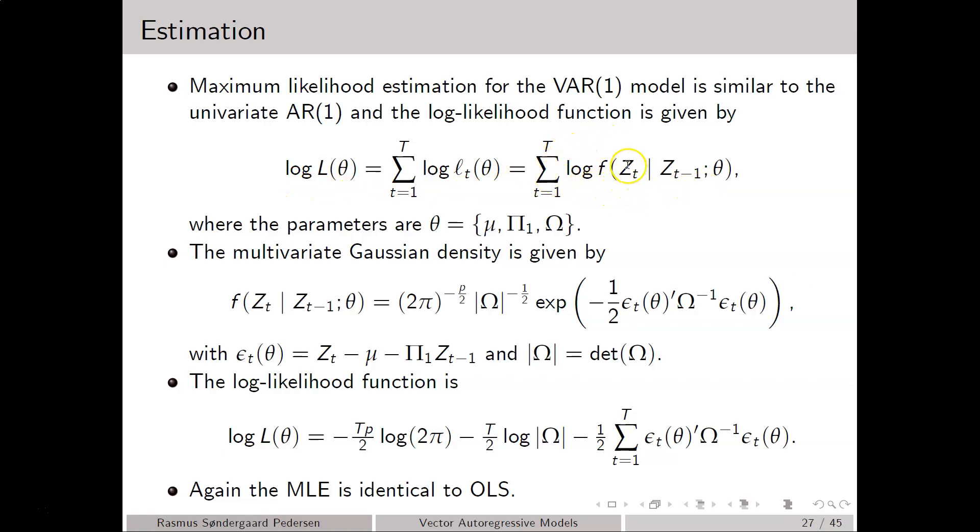The likelihood contributions are given by the conditional density of Z_T given Z_{T-1}. And we have some model parameters to be estimated, namely theta. These include the constant term mu, the autoregressive matrix pi one, and then the covariance matrix omega of the error terms.